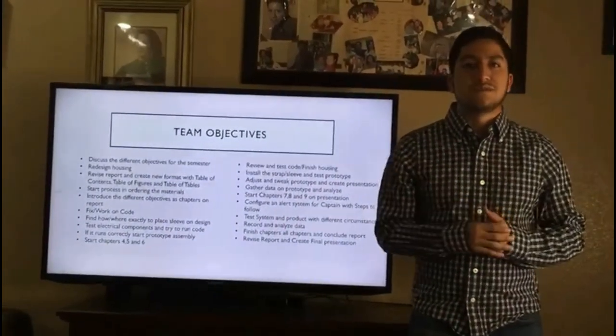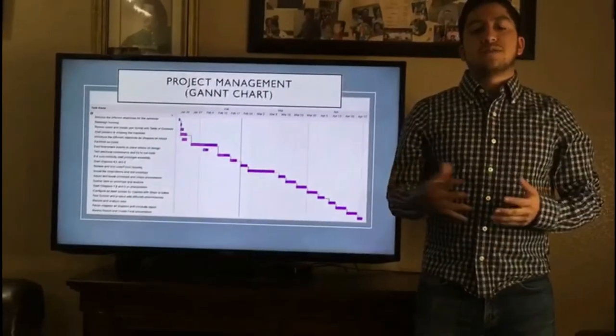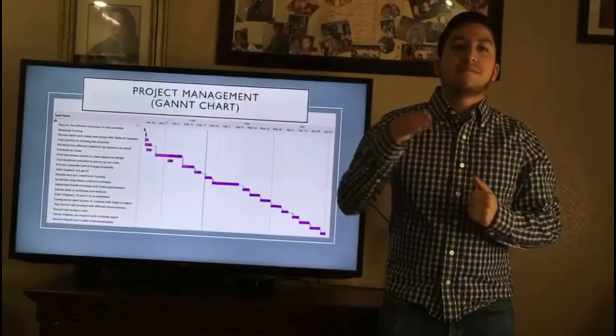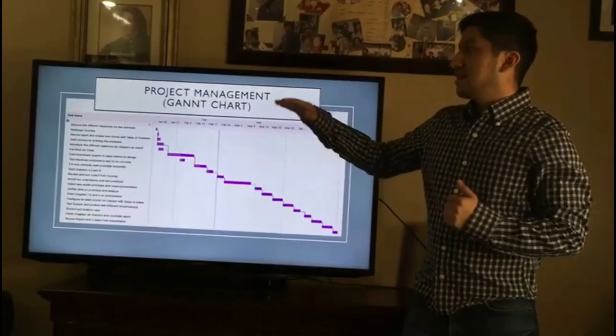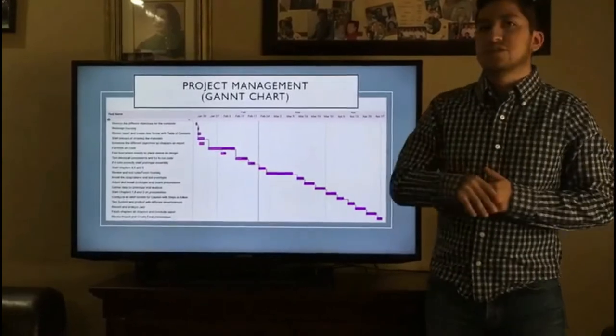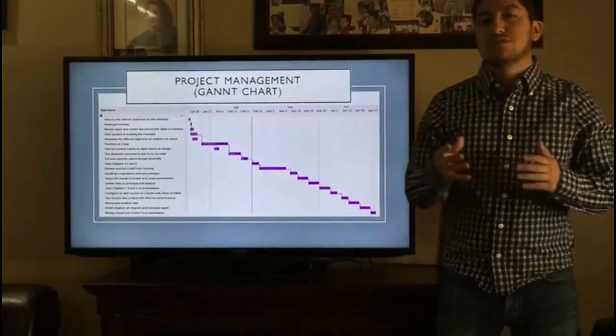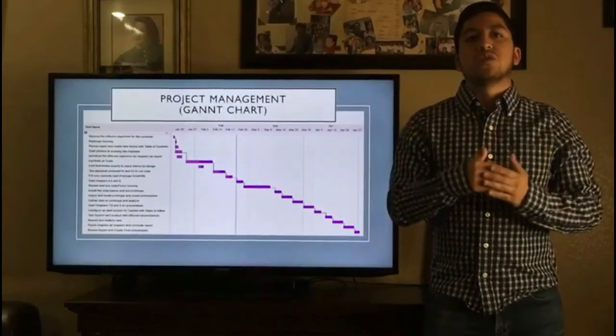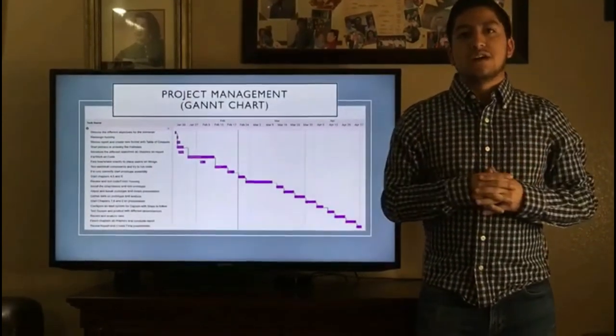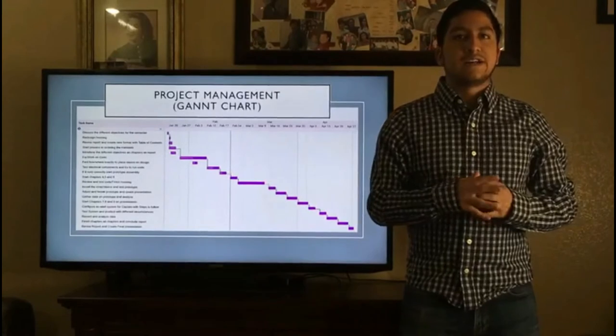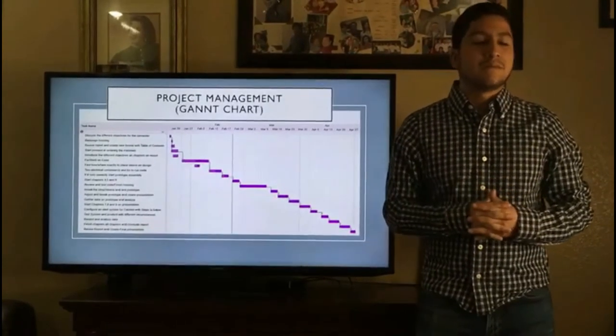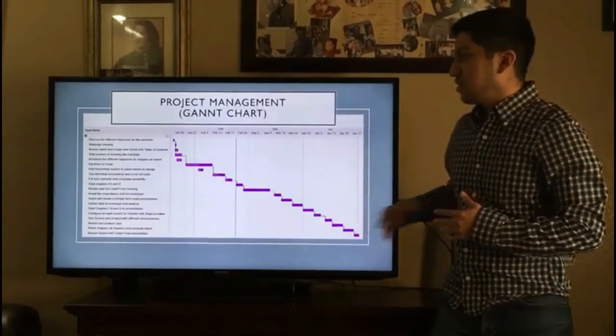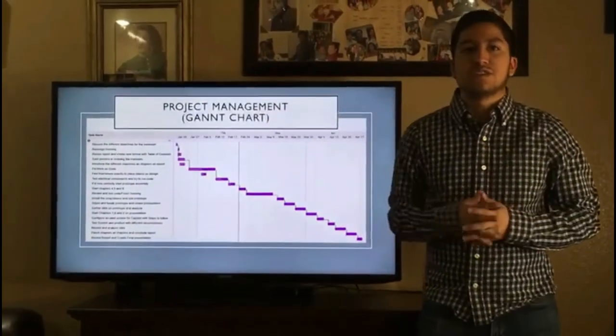To start off our project management, we first had to create our Gantt chart. Our Gantt chart mapped out everything, every activity we had to do, specifically from January 20 to April 30 due date. We tried to set a schedule by going through April 27. That was our goal, and hopefully we'll finish around that time. As you can see, this is the Gantt chart with several steps according to the activities and their predecessors.